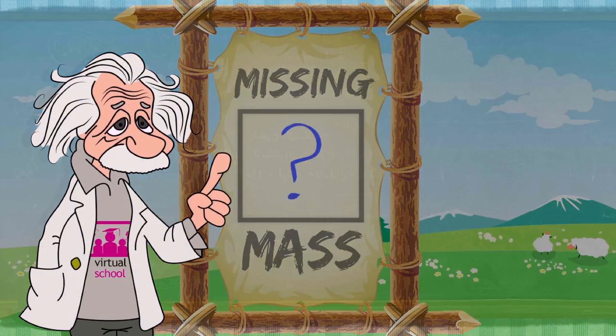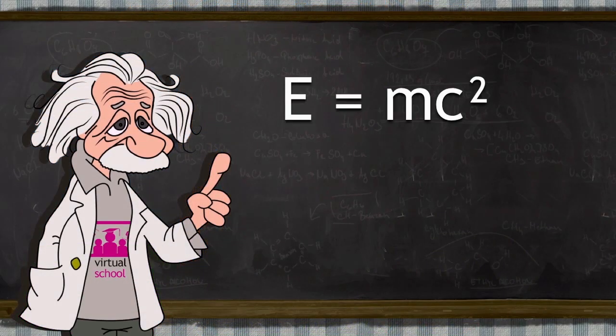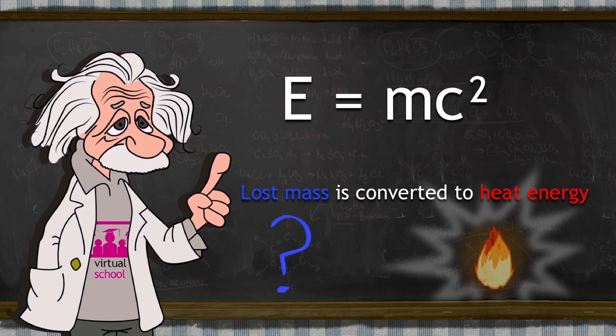Einstein's famous equation, E equals mc squared, shows that this incredibly small amount of lost mass is converted into a huge amount of heat energy. So we know each atom splitting up gives off some heat energy.